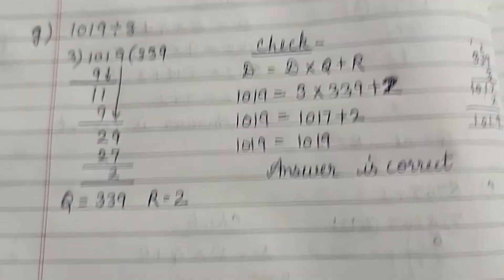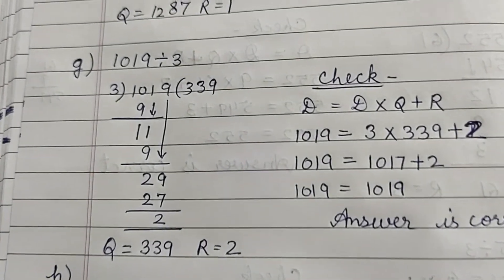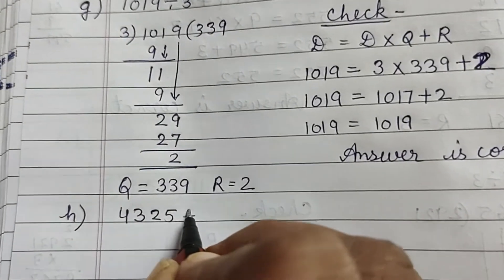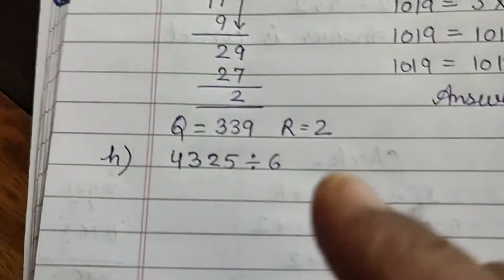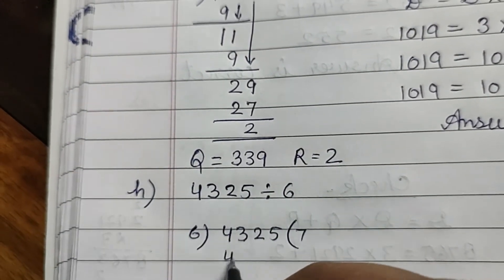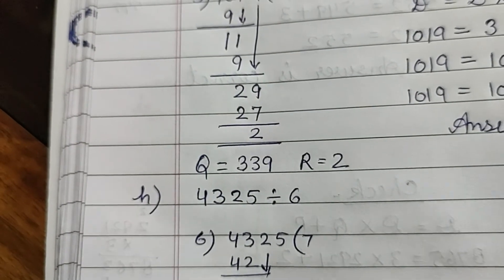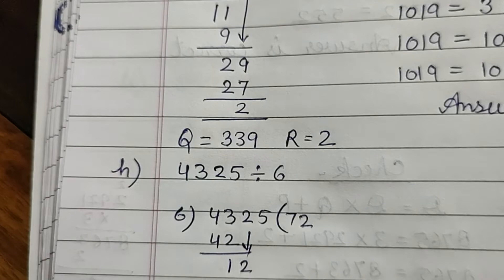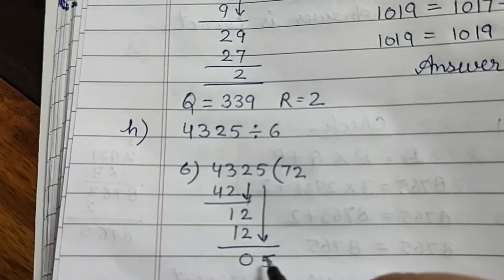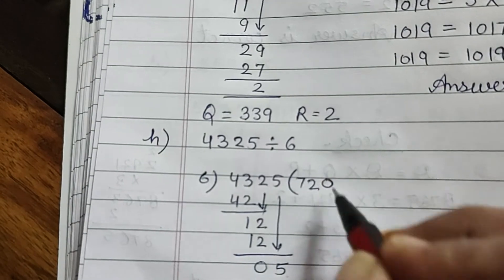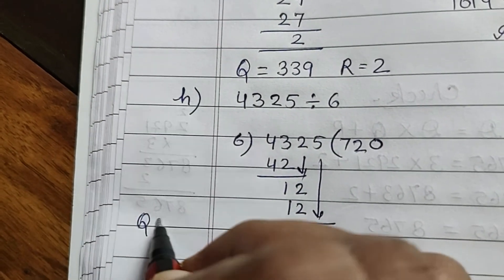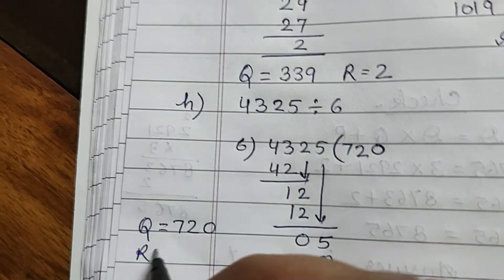Okay, now last Part H: 4325 divided by 6. 6 into 4 — 4 is less than 6, so take 43. 6 into 43 gives 7, remainder 1. Bring down 2: 6 into 12 gives 2, remainder 0. Bring down 5: 6 into 5 — 5 is less than 6, so 0, remainder 5. Quotient is 720 and remainder is 5.